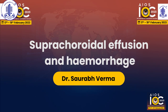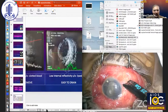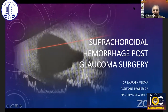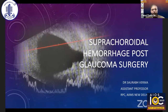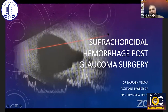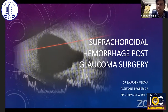I'm an assistant professor at RP Centre of Ophthalmic Sciences. Over the last six months we have had three cases of suprachoroidal hemorrhage after trabeculectomy. All three cases were managed, and one of the cases despite management went into phthisis bulbi. This is a very important complication which should be highlighted to the glaucoma fraternity. Dr. Sora will be discussing how to manage and prevent suprachoroidal hemorrhage after glaucoma surgery.